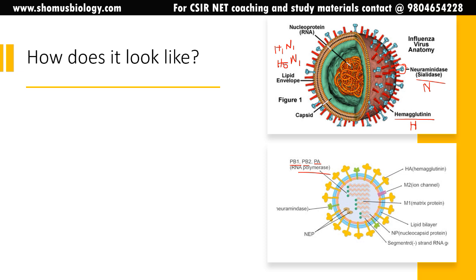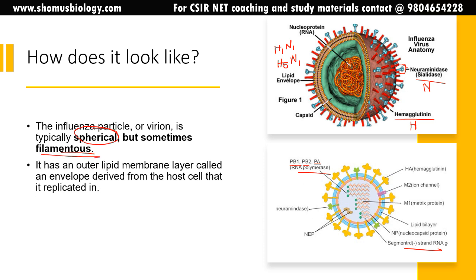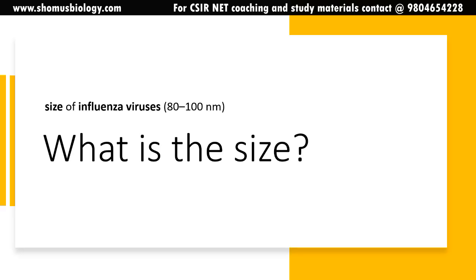The influenza virus particle is spherical, but sometimes it can be filamentous. It has an outer lipid membrane called the envelope, derived from the host cell it replicates inside. The envelope is covered with glycoproteins — hemagglutinin (H) and neuraminidase (N) — which look like spikes. The size of the influenza virus ranges from 80 to 100 nanometers, which is a medium size by viral standards.